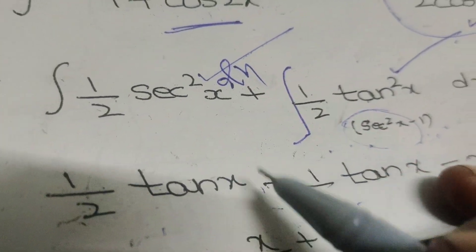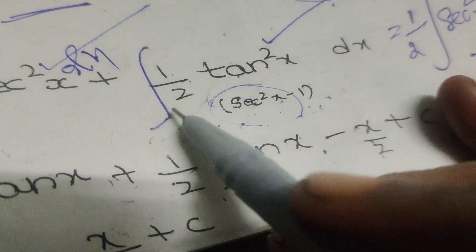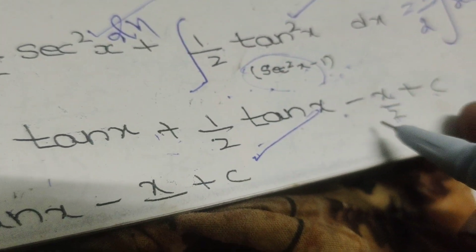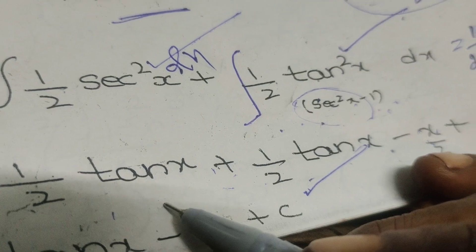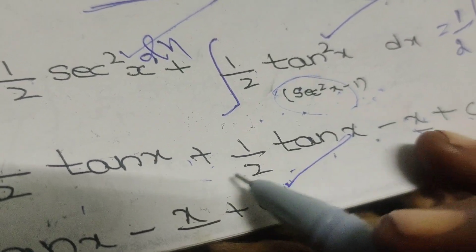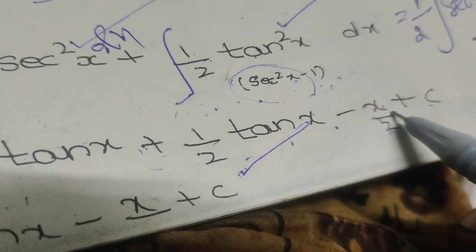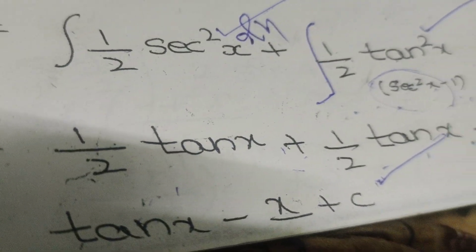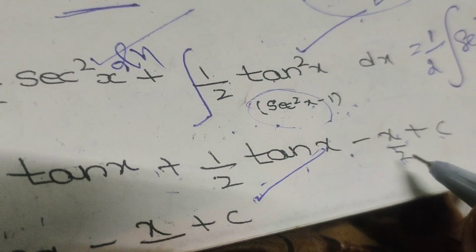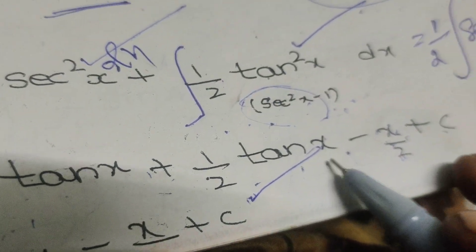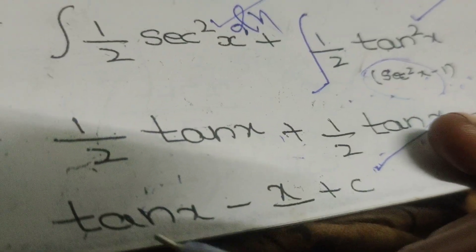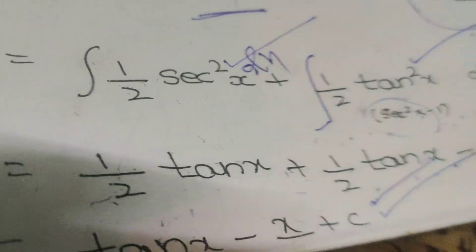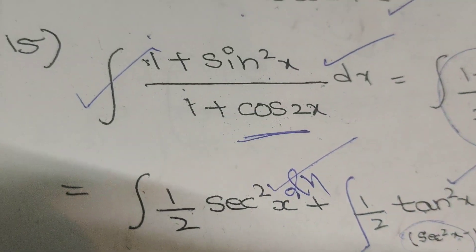Therefore, combining: (1/2)tan x + (1/2)tan x minus (1/2)x plus c. The two (1/2)tan x terms combine to give tan x. Simplifying, 2 times (1/2)tan x — the 2 and 2 cancel — giving the final answer: tan x - x + c. This is the complete solution. Thank you.